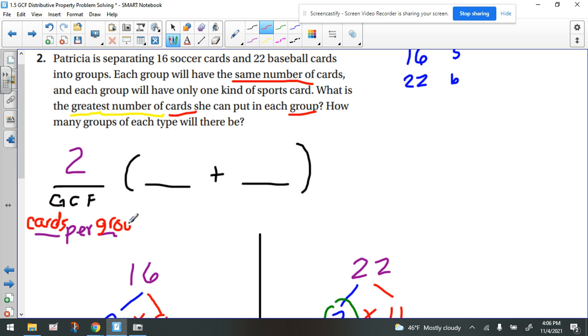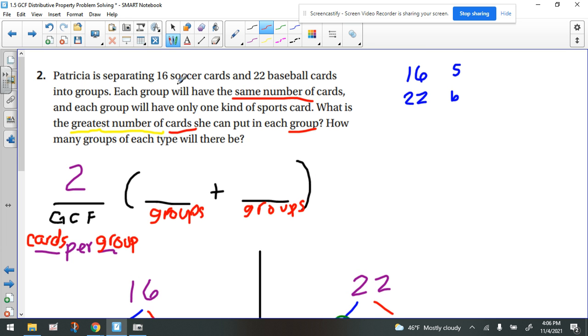Now the other thing, it's a little hint. If you can figure out the something per something, then usually the words that you're going to put underneath here, this is going to be a certain number of groups, and this is going to be a certain number of groups. But then how are the groups going to be different from each other? We have 16 soccer cards, and we have 22 baseball cards. So we're talking about soccer. Let's put an S here. And we're talking about baseball. Let's put a B here.